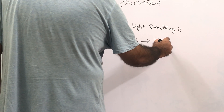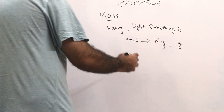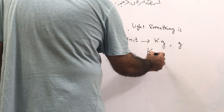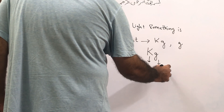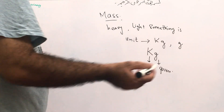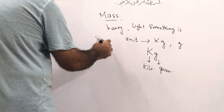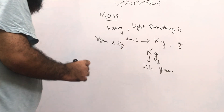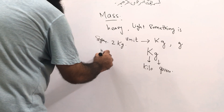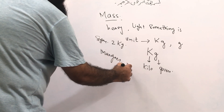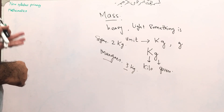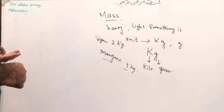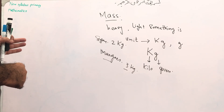The unit of mass is either kilogram or gram. Kilogram is written as 'kg' — capital K for kilo, small g for gram. For example, I bought 2 kg of sugar, or 3 kg of mangoes. Things like sugar, rice, fruits, and flour are measured in terms of kilograms.